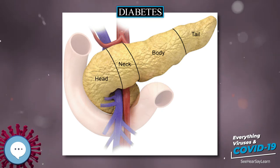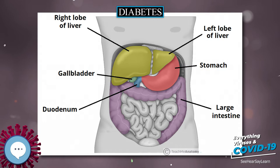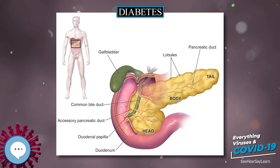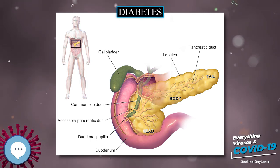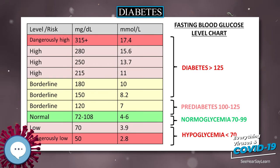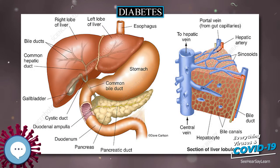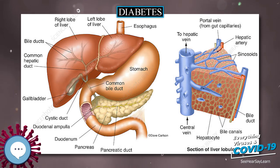Type 1 diabetes must be managed with insulin injections. Type 2 diabetes may be treated with medications with or without insulin. Insulin and some oral medications can cause low blood sugar. Weight loss surgery in those with obesity is sometimes an effective measure in those with type 2 diabetes. Gestational diabetes usually resolves after the birth of the baby.